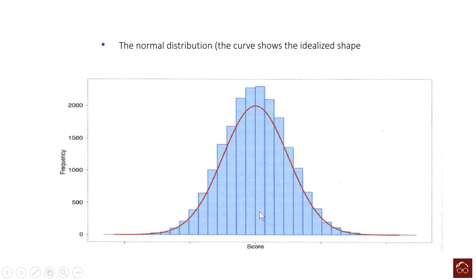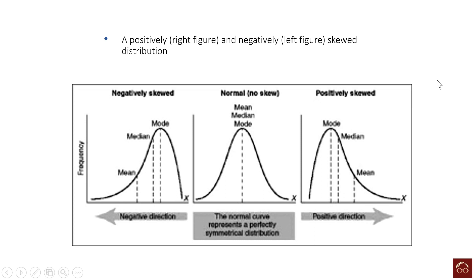The idea is that the majority of our observations will be towards the mean. In an ideal world, majority of observations will be towards the mean, and we will have equal distribution on the left side and the right side from the mean — equal distribution of data with smaller and larger values from the mean. Extreme low and extreme high observations will be few. That's the idea of normal distribution. One of the most important properties is that in normally distributed data, the mean, median, and mode will all three be the same.